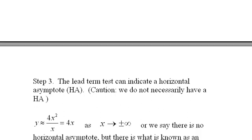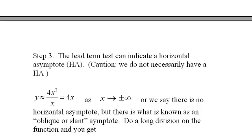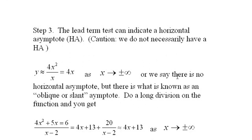The next step is lead term test, where we take the highest power on top and the highest power on the bottom. And we say that y is approximately, in this case, 4x squared over x. And the highest power on the bottom is x, and the lead term on the top is 4x squared. So this is going to behave very similar to the function y equals 4x as x goes to plus and minus infinity.